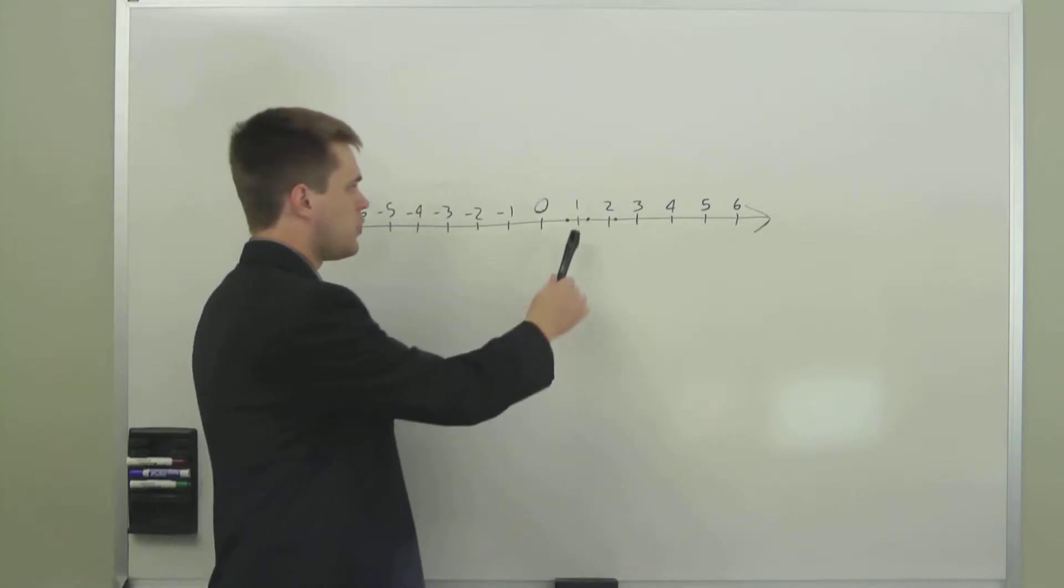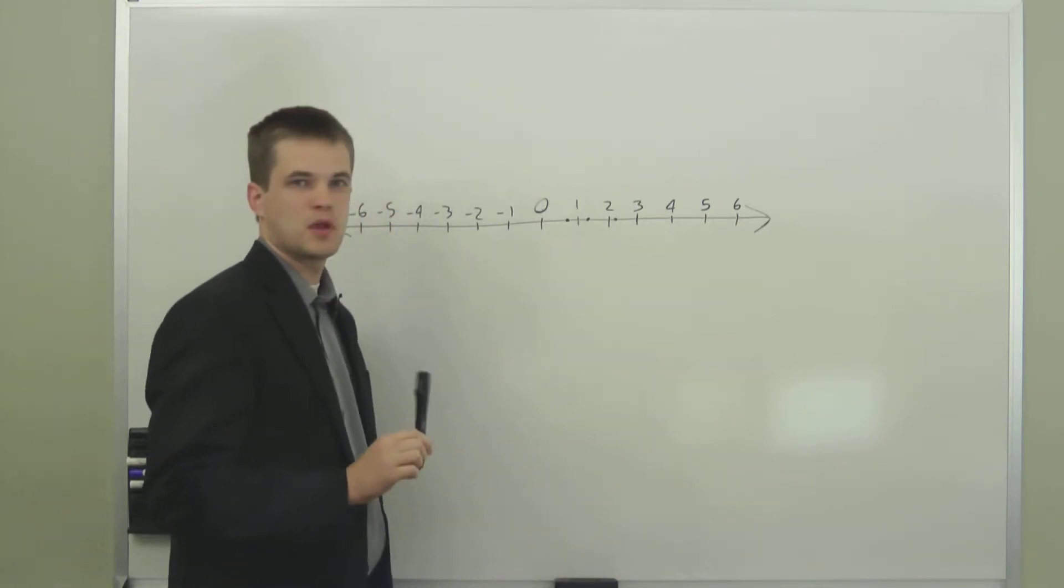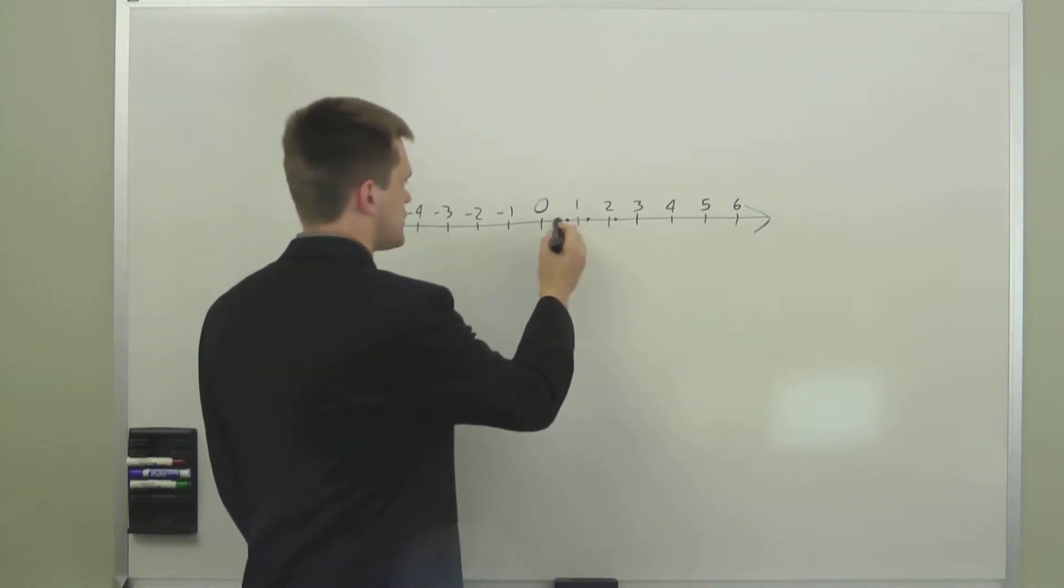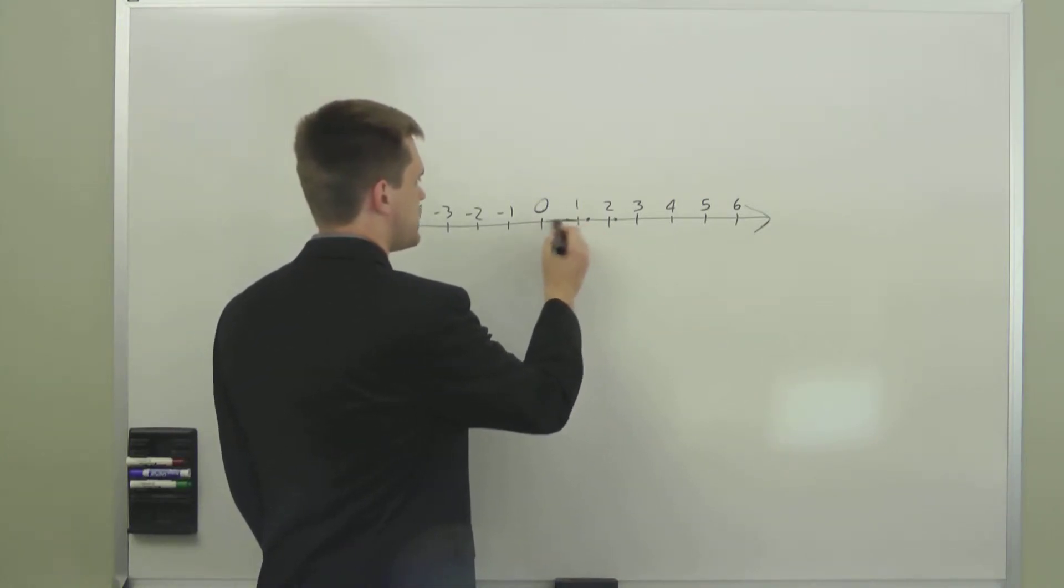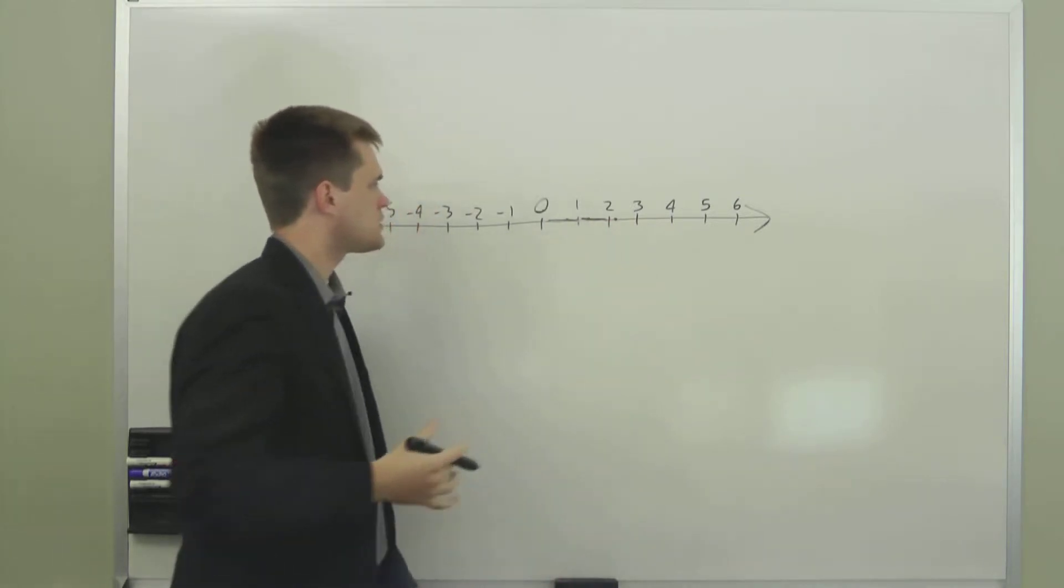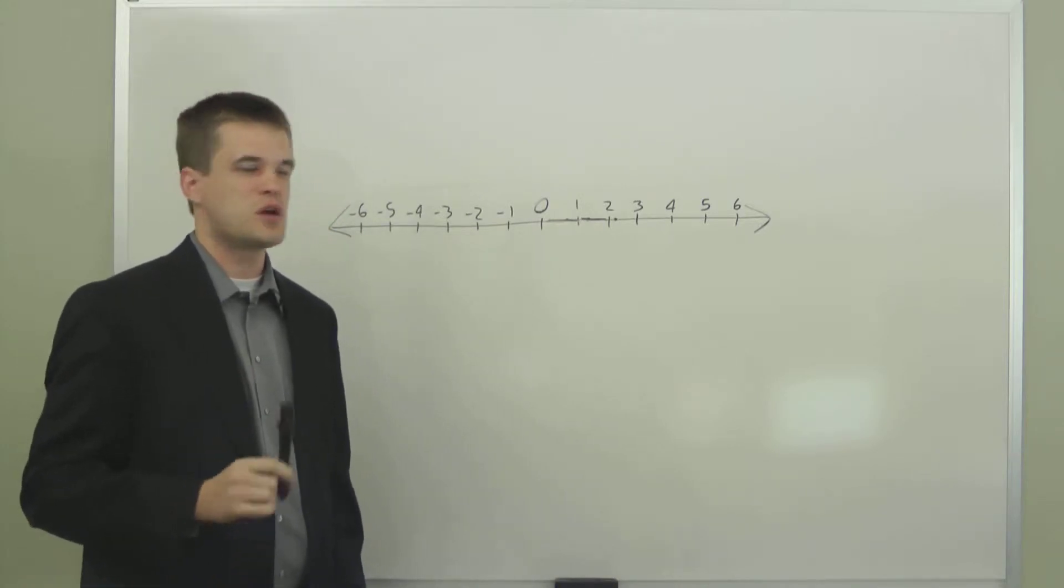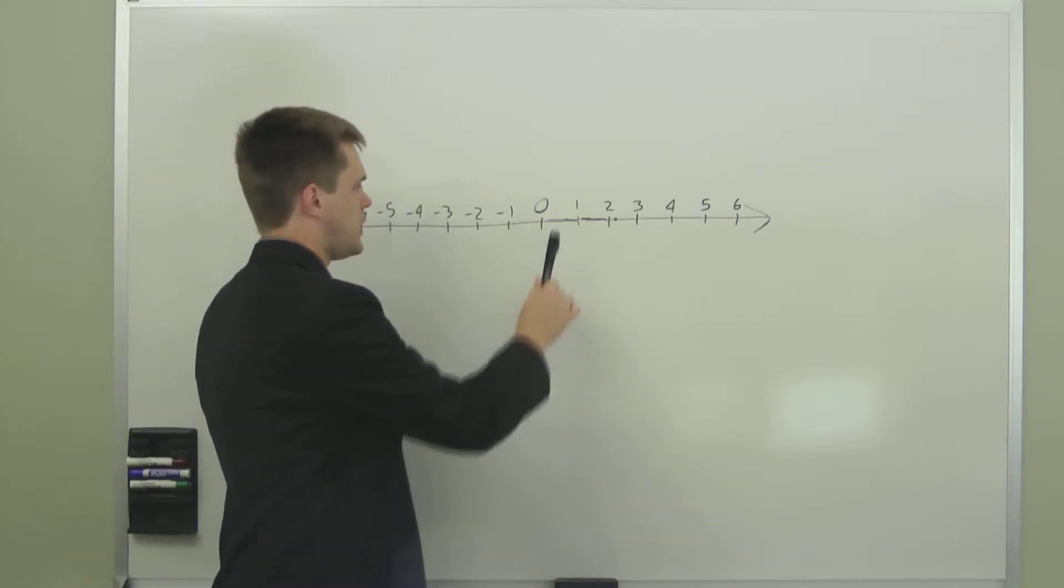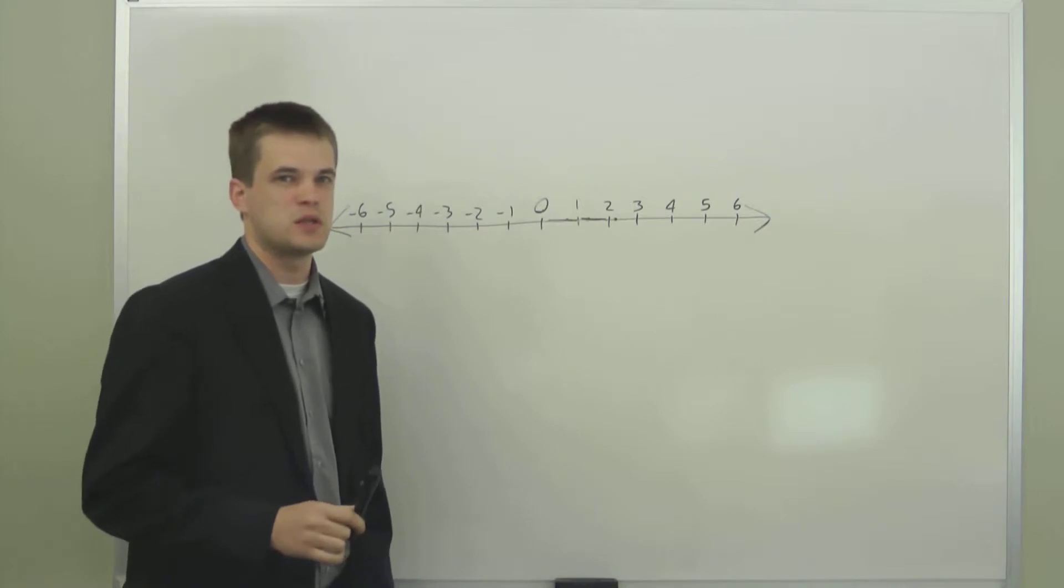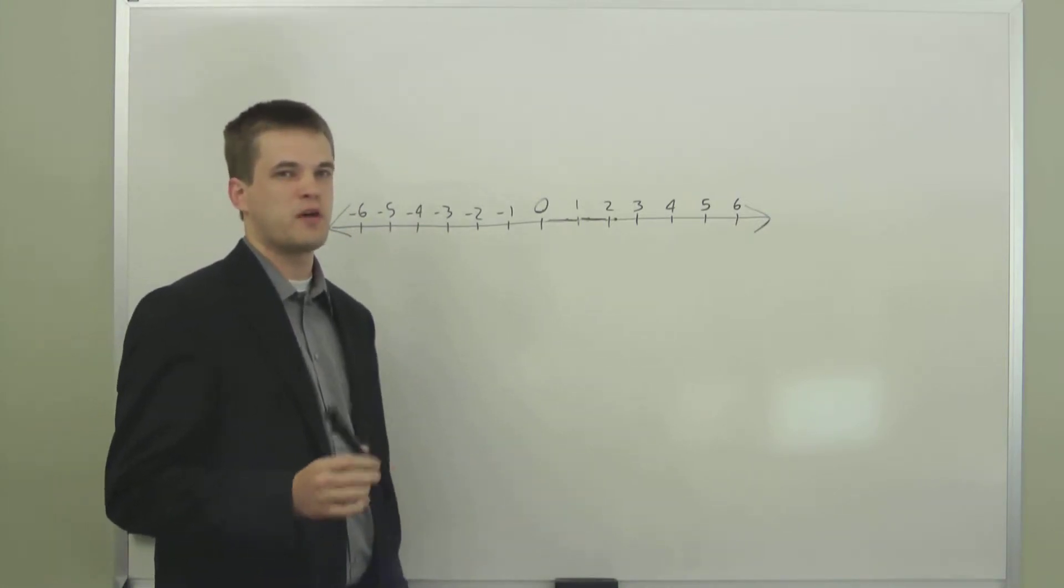The integers are the whole numbers that you see as tick marks on the number line. But in between each of these integers, you have these large spaces that you can't describe with just integers. You have to use other numbers to represent the space in between the integers. To do that, we have decimals and we have fractions.